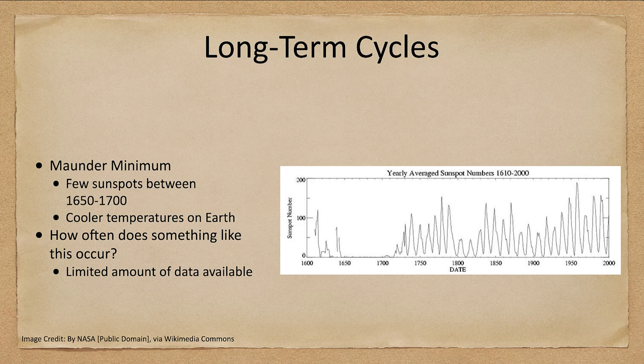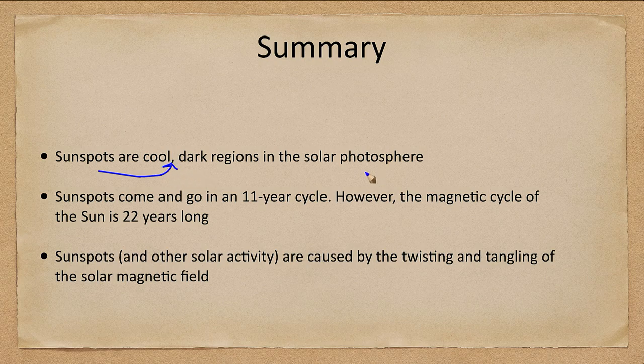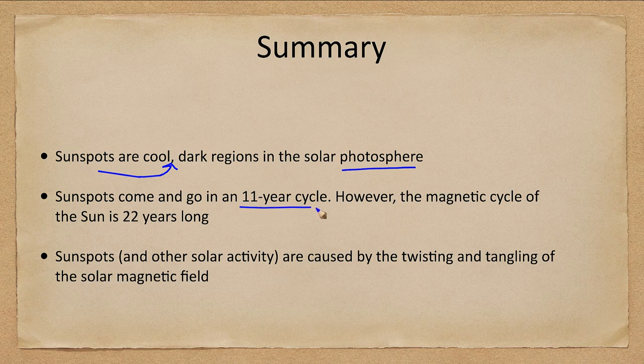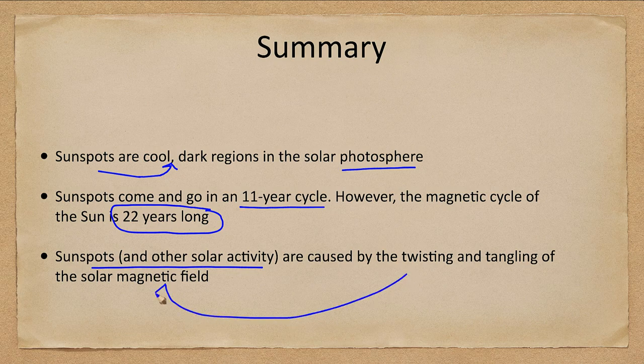Let's finish up with our summary. Sunspots are the cool dark regions that we see in the photosphere of the sun. The sunspots come and go in an 11 year cycle, but the magnetic cycle is 22 years long. Sunspots and other solar activity are caused by twisting and tangling of the solar magnetic field.